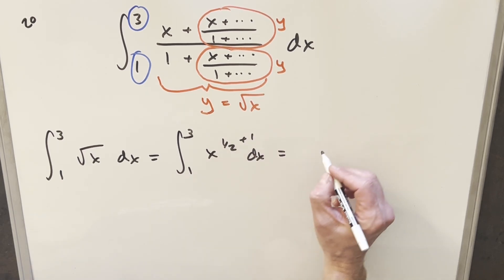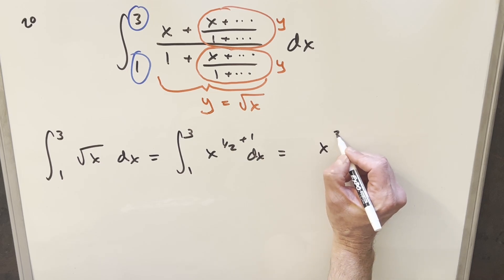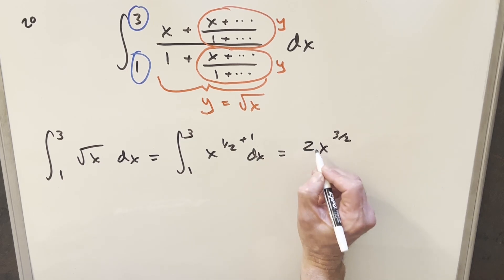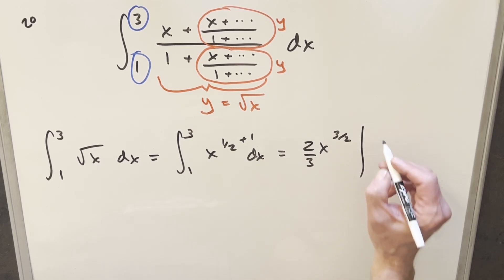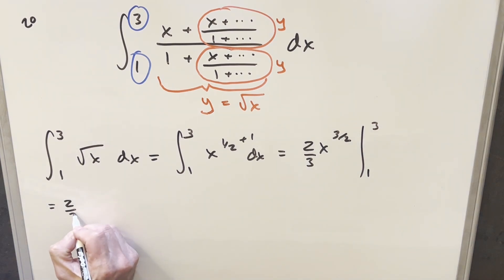We'll do power rule, add a plus one there. So this is going to become x to the three halves, take the reciprocal, two thirds in front, and we need to evaluate this from one to three. I'll take two thirds in front, then plugging in three, we're going to have three to the three halves minus plugging in one, that's just going to be one.